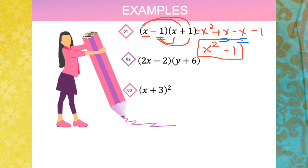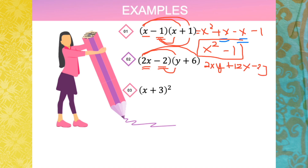The second example: 2x distributed to the second bracket — 2x times y is 2xy; 2x times 6 is plus 12x; negative 2 times y is negative 2y; negative 2 times 6 is negative 12. Therefore the final answer is 2xy plus 12x minus 2y minus 12, because there is nothing in common between all terms.